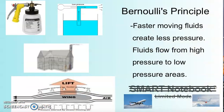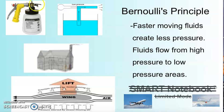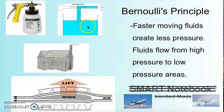Another principle is Bernoulli's principle: faster moving fluids create less pressure, and fluids flow from high pressure to low pressure areas. Here we have a garden hose attached to something you want to spray. When water goes through the hose fast, it creates less pressure than normal water would have. So the normal water inside the container gets sucked up through it, because areas of high pressure want to go to areas of low pressure. Any liquid going through this pipe is going to suck up the liquid in the bottom because of Bernoulli's principle.